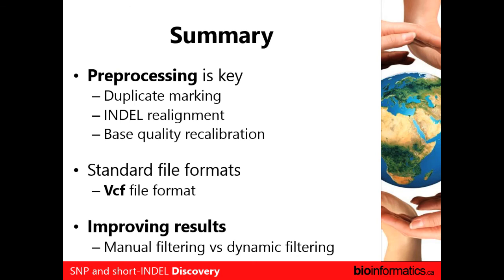To summarize: pre-processing is key. Basically everything we did in module two — duplicate marking, indel realignment, and base quality recalibration — all three of those actually contribute to reducing false positives. Just like before, we have a standardized file format called VCF. It's a bit complicated, but after you've seen it a few times, it starts to make sense. For improving results, we've learned about using manual filtering techniques and dynamic filtering techniques.